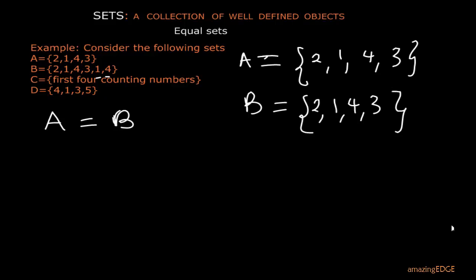Now, let's look at set C. What do you think about set C? Set C says the first counting numbers. So when we're counting numbers, 1, 2, 3, and so on. So we are told to get the first four. So the first four are 1, 2, 3, and 4.